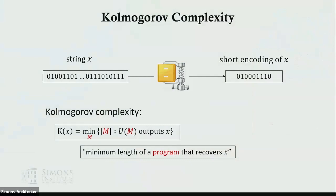For string x, we want to know the shortest encoding from which we can recover x. The Kolmogorov complexity of x is the minimum length of a string M, which we will call a program, such that if you run the universal Turing machine on M we get back x.